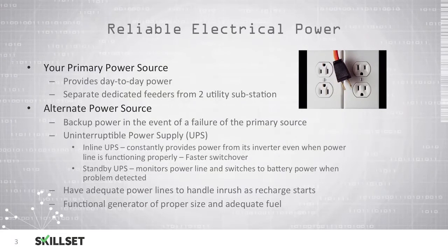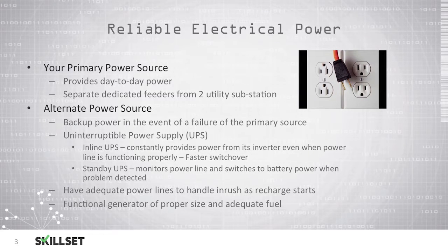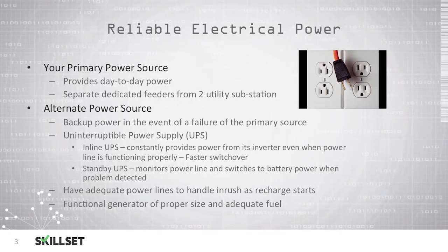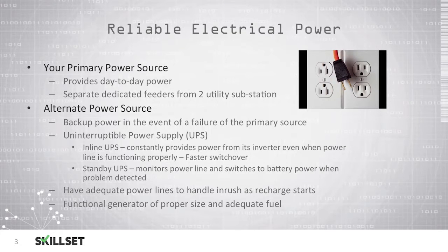You also should make sure that you have an alternate power source in case the primary source fails. One way of doing this is by using an uninterruptible power supply, or UPS. There are two types of UPSs. Inline UPSs are constantly providing power from their inverters even when you have utility power, and can switch over to battery faster if the power goes out than a standby UPS. A standby UPS monitors the power line and switches over to battery when a problem is detected. However, these systems could have a small delay which could cause your machines to reboot, so an inline UPS is considered to be better, although it will also be more expensive.